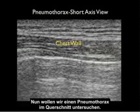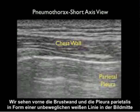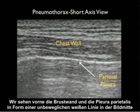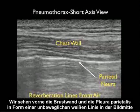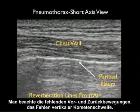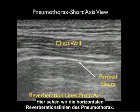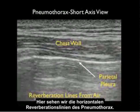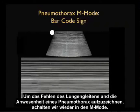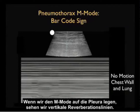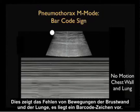Now let's inspect a pneumothorax from the short axis view. We see the chest wall anteriorly, the parietal pleura shown as a single non-mobile white line in the middle of the image. Note the failure of movement back and forth, the lack of vertical comet tails, and what we see here is repeating horizontal air lines from the pneumothorax. To document the absence of lung sliding and the presence of a pneumothorax, we'll again turn to M-mode. Placing the M-mode cursor down on the pleura, what we'll see is a set of linear repeating lines, documenting no motion of both the chest wall and the lung — a finding known as the barcode sign.